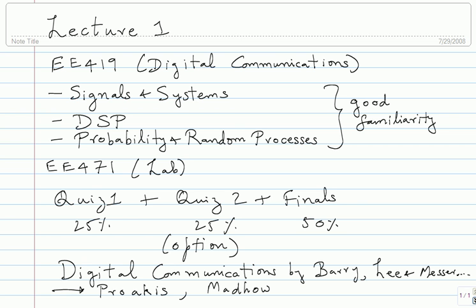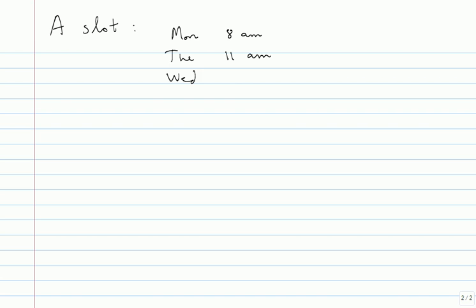We meet in the A slot. The times are Monday 8 a.m., Tuesday 11 a.m., Wednesday 9 a.m., and Thursday 1 p.m. If it turns out none of you are doing a lab on Thursday, I'm okay with extending the Thursday hour from 1 to 3 and skipping the Monday morning 8 a.m. class. Otherwise, we'll just meet at 8 a.m. on Monday morning.